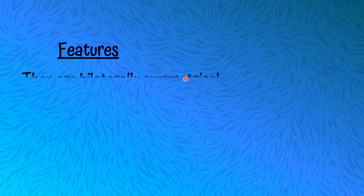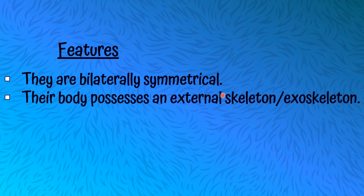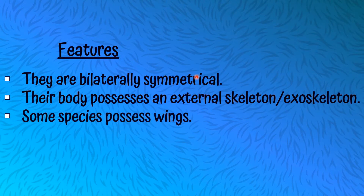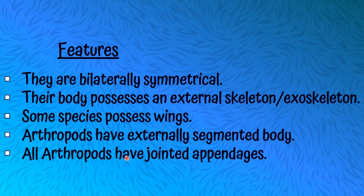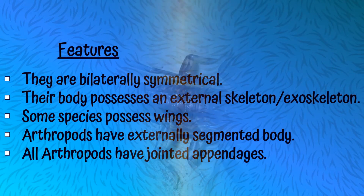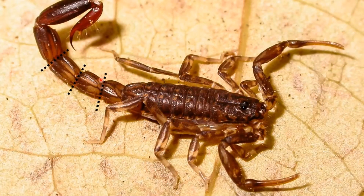Let's talk about the features of Arthropods. They are bilaterally symmetrical. Their body possesses an external skeleton, or exoskeleton. Some species possess wings, like dragonflies and butterflies. Arthropods have an externally segmented body. All Arthropods have jointed appendages.